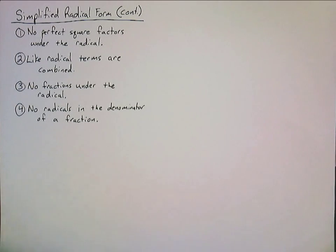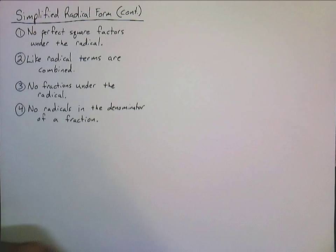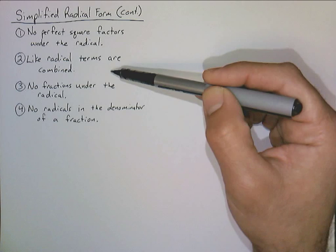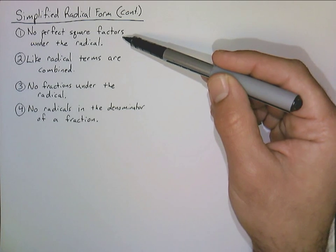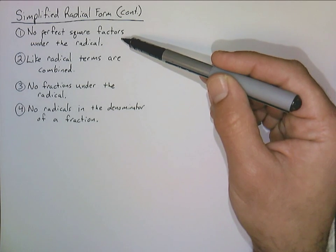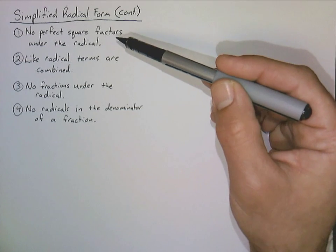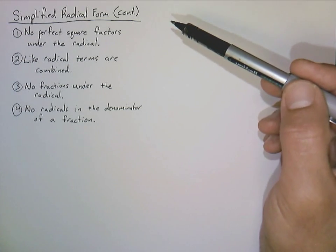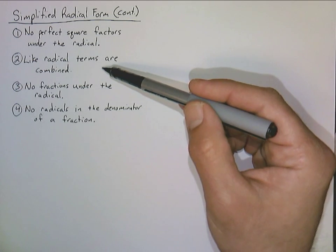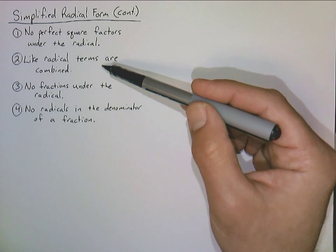Hello again, everyone. This is Mr. V. Hill, and we're going to continue on talking about simplified radical form today. Last video, we talked about the first two criteria for simplified radical form: one being that there's no perfect square factors under the radical, which we took care of by using the product property of square roots, essentially distributing the radical to both factors. And also, we talked about combining like radical terms.